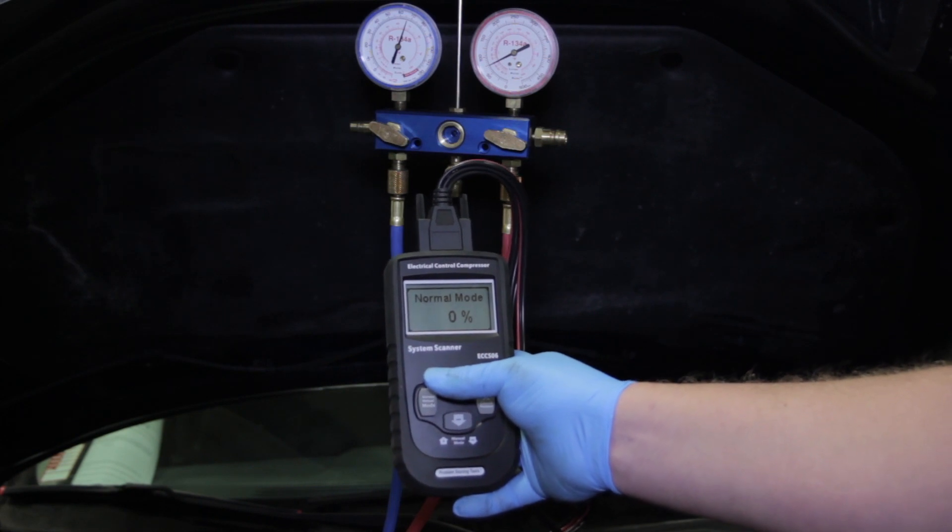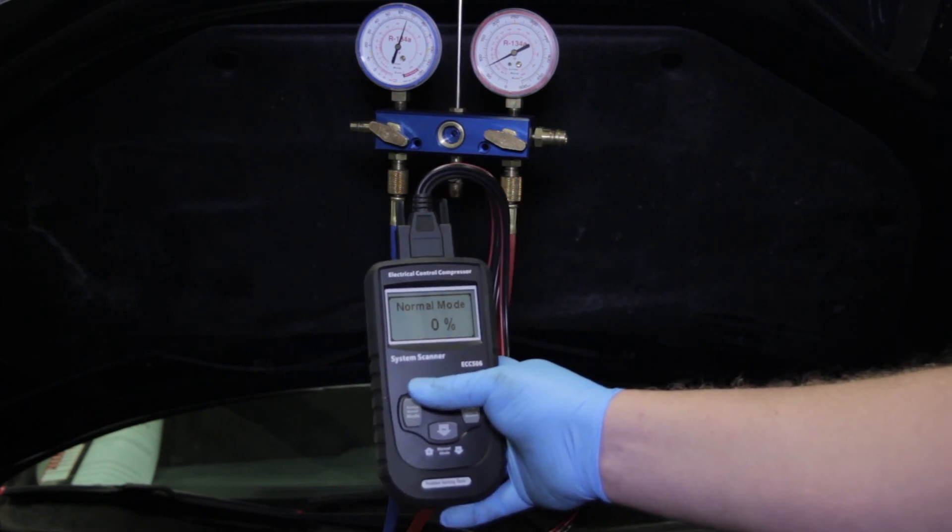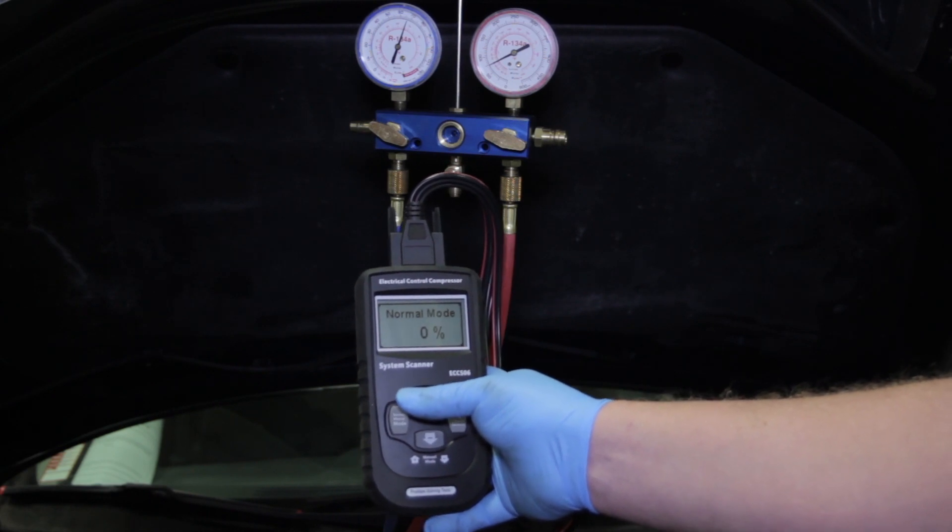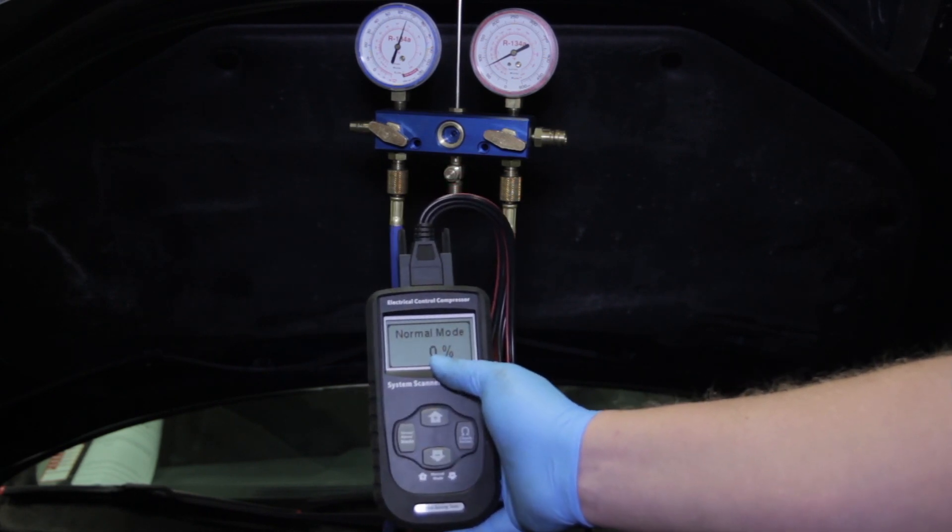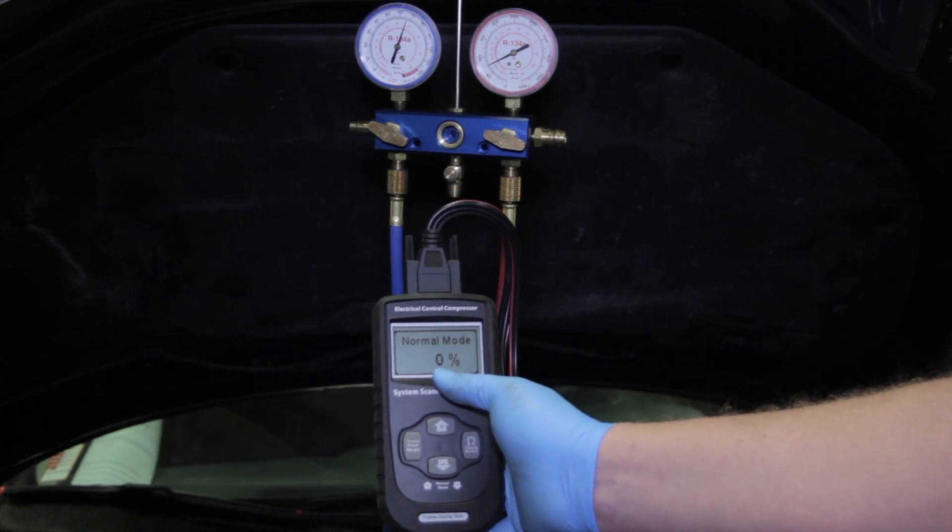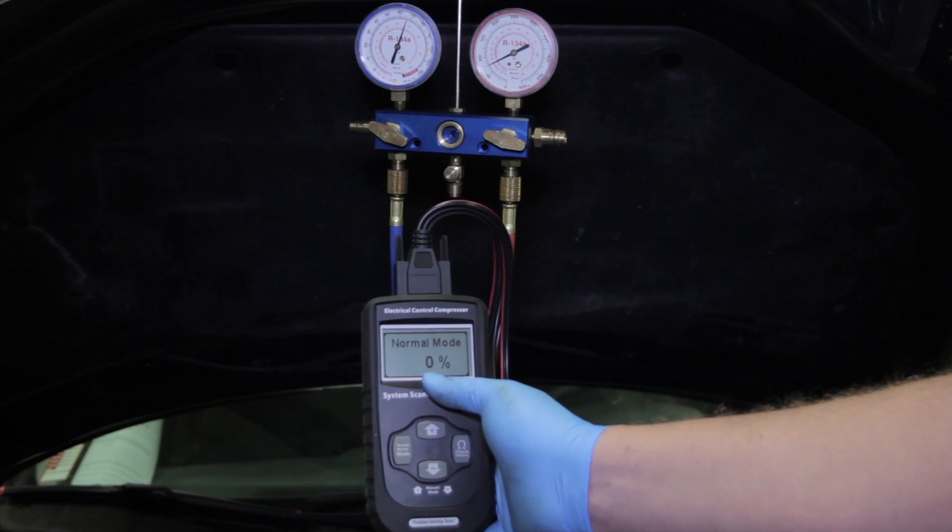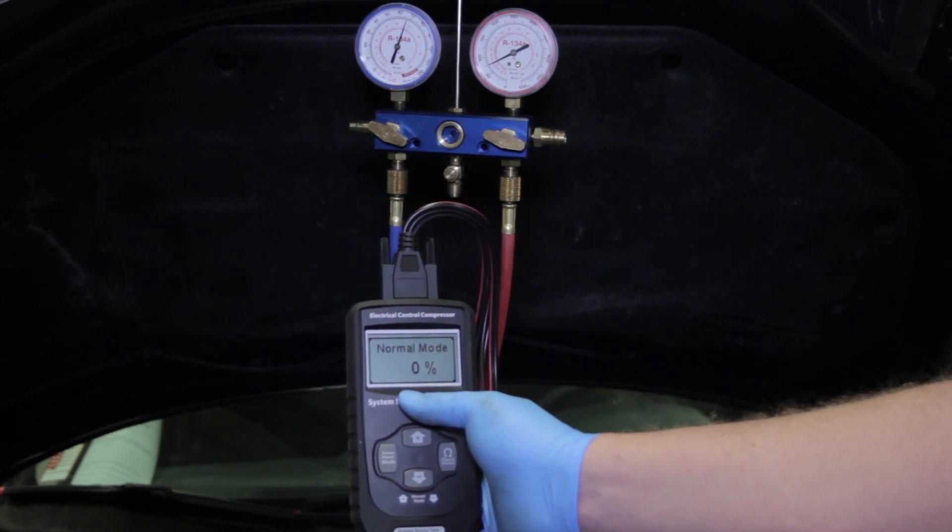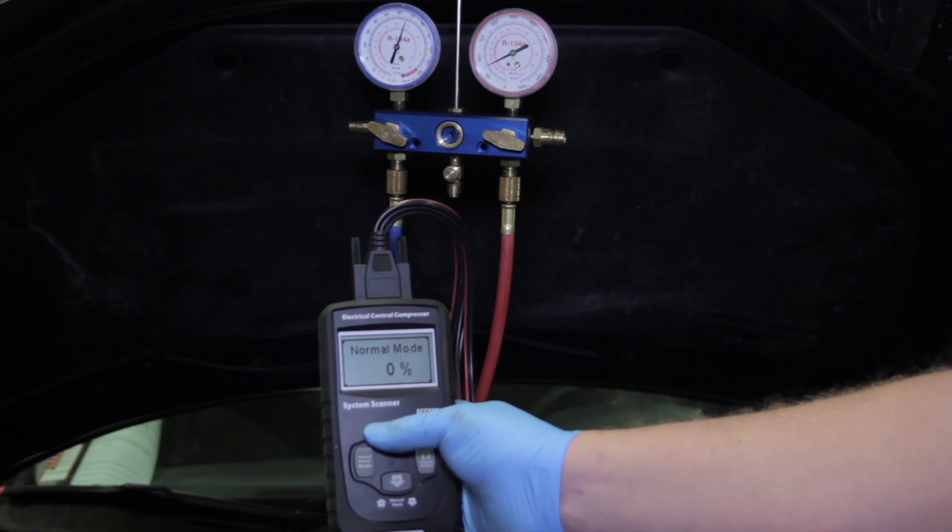Judging by the pressures shown on the gauges, there is some refrigerant in the system here indicated by the static pressure shown here. And if we look at my tool, it shows in normal mode, zero percent. That indicates that the ECM is sending zero signal to that control solenoid trying to turn it on.